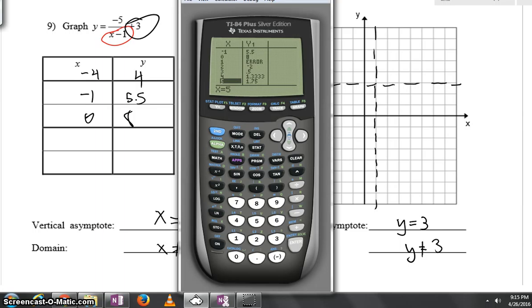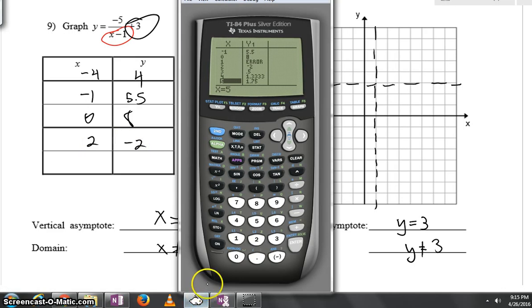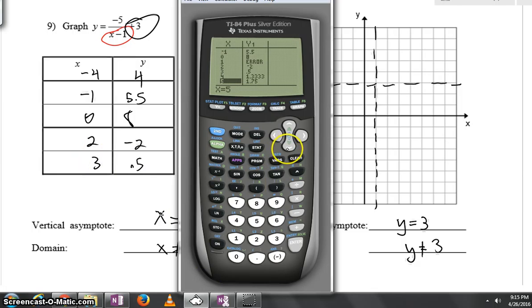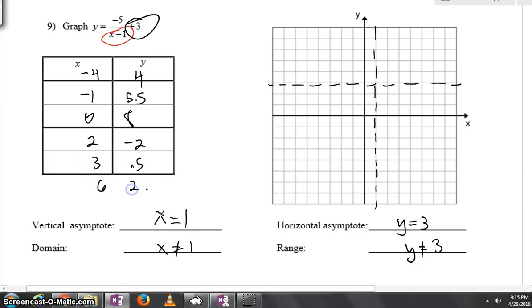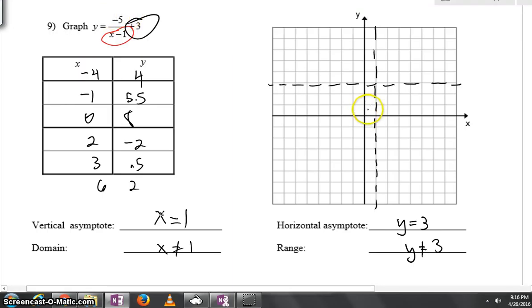As you're looking just a little bit below your error, you could see we'd be at 2, negative 2. Right after that, we'd be at 3, 0.5. But you might wonder if you scroll down, if you get a friendly point, you do. And that's at 6, 2. I kind of like those friendlier points.